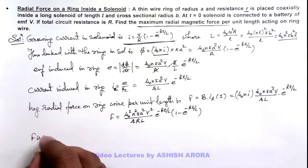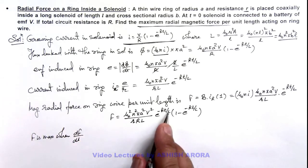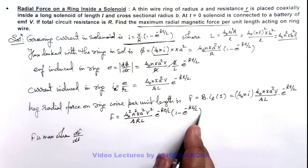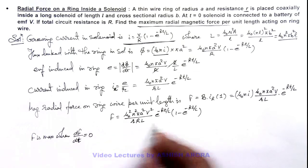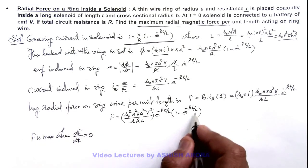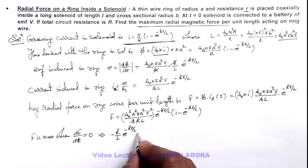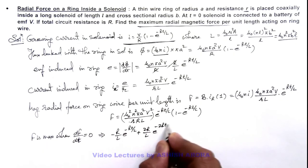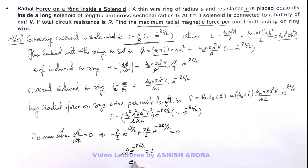The force F is maximum when dF/dt equals zero. Differentiating and setting to zero gives: minus(R/L)·e^(-Rt/L) plus 2(R/L)·e^(-2Rt/L) equals zero. Simplifying, we get 2·e^(-Rt/L) equals 1, so e^(-Rt/L) equals 1/2. This means the force is maximum when the factor e^(-Rt/L) becomes one half. The second derivative being negative at this point confirms it is indeed a maximum.